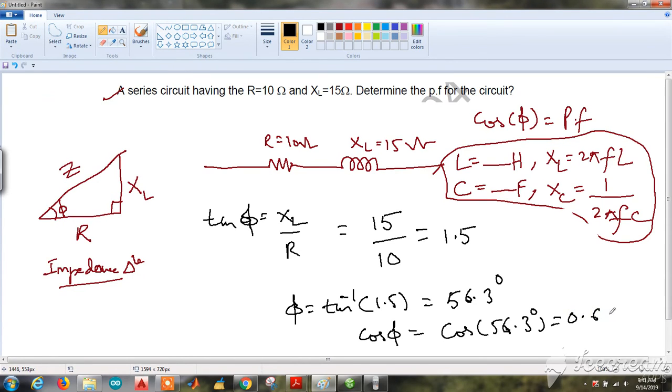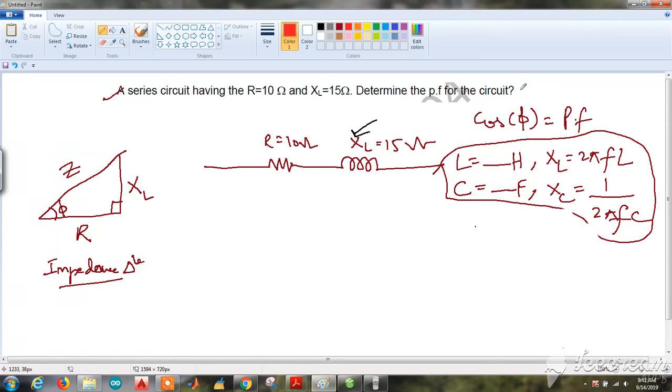Power factor lag. Why lag? Because inductor is present, and in an inductor, current lags voltage. In an ideal inductor, current lags voltage by 90 degrees. So our answer is 0.6 lag.